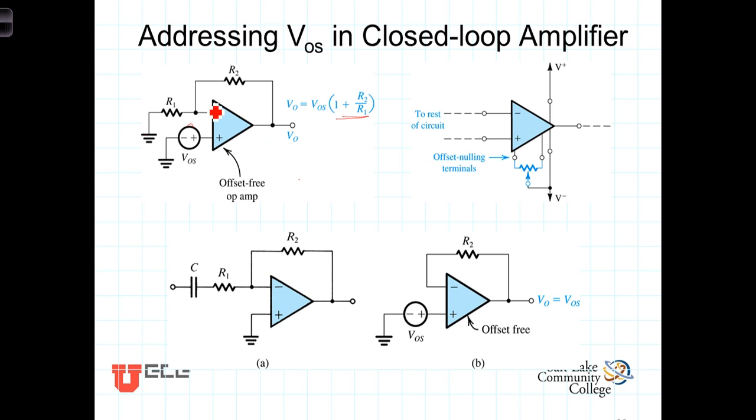But with negative feedback in place, the amplifier is not so quick to saturate. And the effect of the offset voltage is significantly reduced. In fact, it's amplified by the closed-loop gain as would a signal applied to the non-inverting terminal.